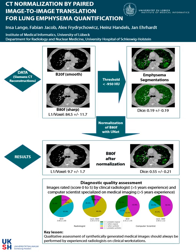After unit-based normalization we were able to reduce the L1 distance to a mean of only 9.7 HU units and achieved a mean Dice of 0.55.